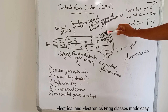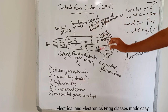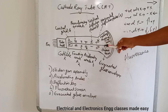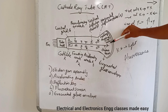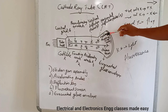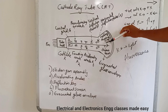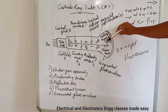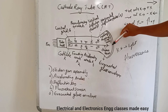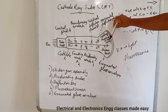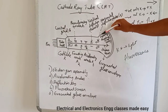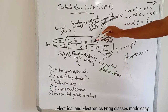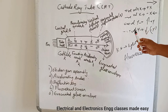The function of the aqua dag coating is to accelerate the electron beam to the screen to produce a spot of light after it passes between the deflecting plates. Also, this coating collects the secondary electrons — that is, after the electron beam strikes, some electrons are scattered, and those scattered electrons are collected by the coating. These are called secondary electrons, and they are returned to the cathode.